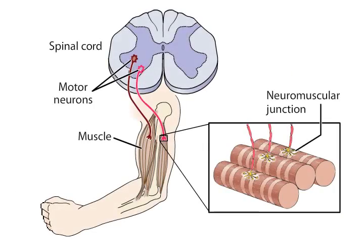Acetylcholine also acts at a variety of postsynaptic targets in the peripheral nervous system, preeminently at the neuromuscular junction of striated muscles and in the visceral motor system.